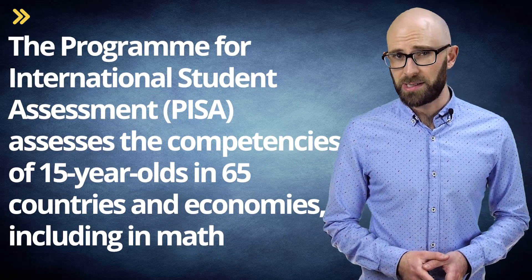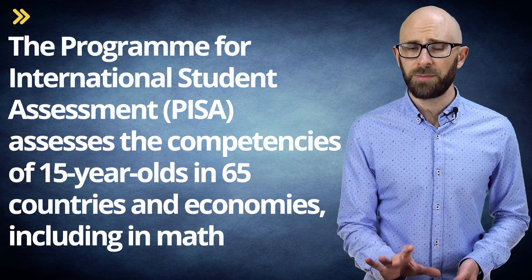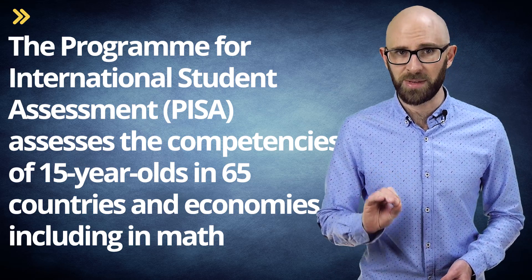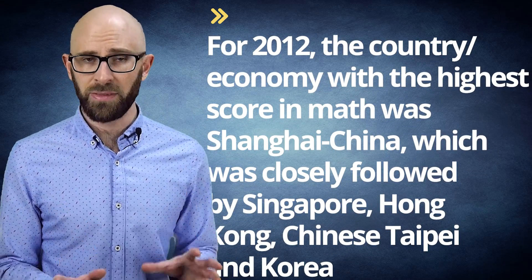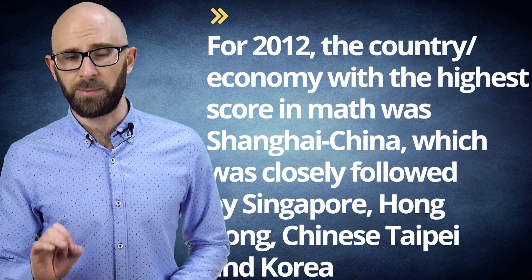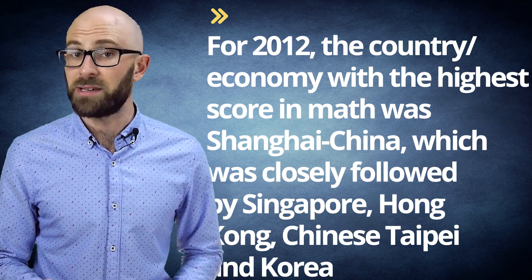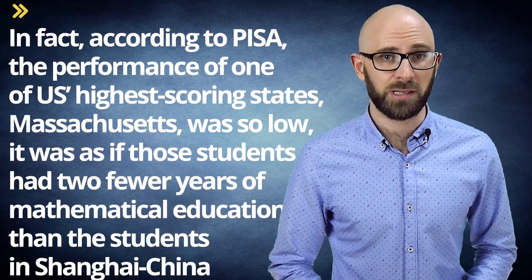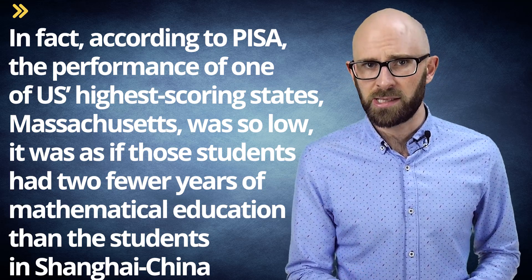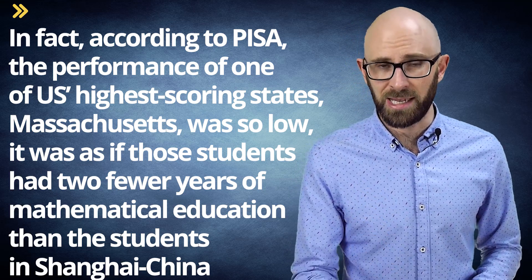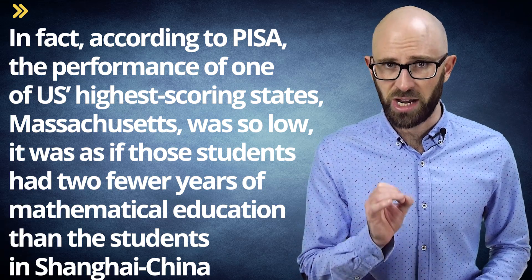The Program for International Student Assessment (PISA) assesses the competencies of 15-year-olds in 65 countries and economies, including in math. For 2012, the country with the highest score in math was Shanghai, China, closely followed by Singapore, Hong Kong, Chinese Taipei, and Korea. Canada ranked 13th, Australia 19th, Ireland 20th, the United Kingdom 26th, and the United States 36th. According to PISA, Massachusetts — one of the US's highest-scoring states — performed as if its students had two fewer years of mathematical education than students in Shanghai.